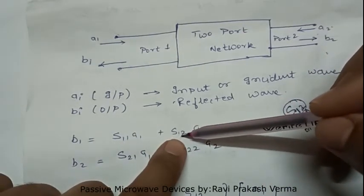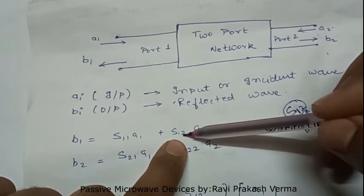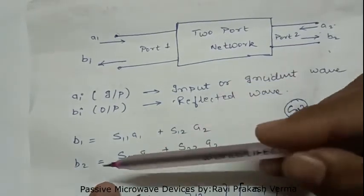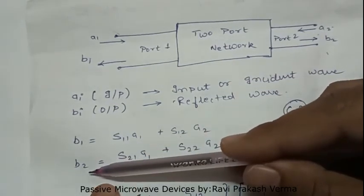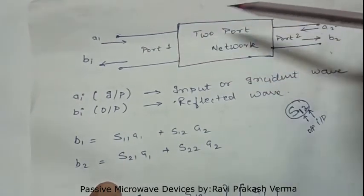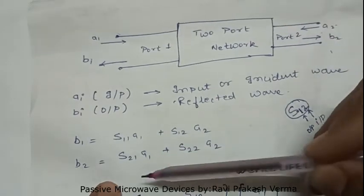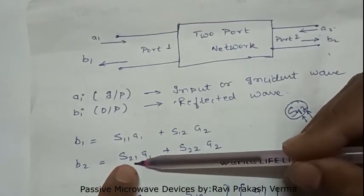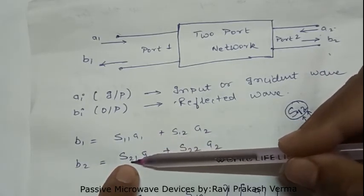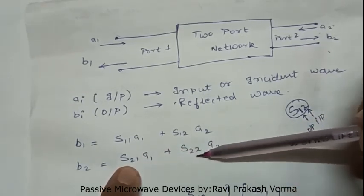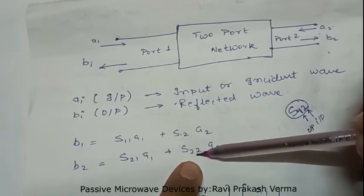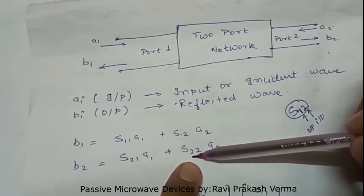S12 means input is provided at port 2 and output is taken from port 1. Similarly, b2 is the reflected wave at port 2 when input is provided at port 1 and also at port 2. S21 represents when input is incident on port 1 and output is taken from port 2, while S22 represents when input is provided at port 2 and output is taken at the same port 2.